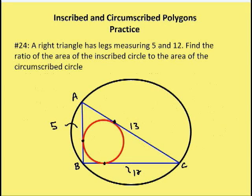Moving on to Problem 24. A right triangle has legs measuring 5 and 12. Find the ratio of the area of the inscribed circle to the area of the circumscribed circle. The circumscribed circle goes around the triangle. So AB = 5, BC = 12, and AC = 13.